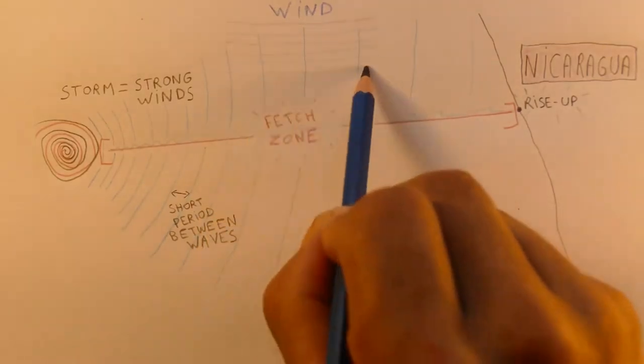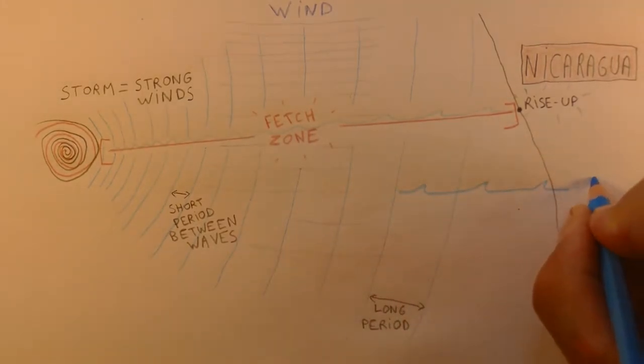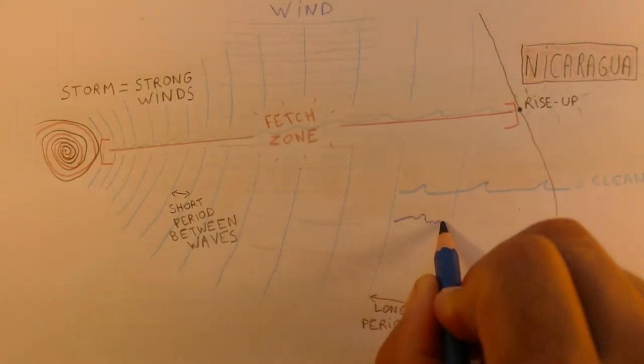If there's a lot of wind blowing over that fetch zone, then the swell that arrives at the beach is going to be quite messy. However, if there's no wind and that fetch zone is very calm, it's going to be quite clean.